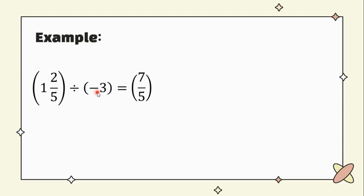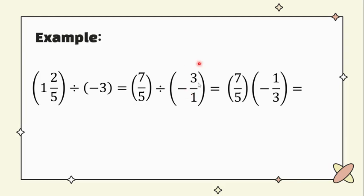We have here negative 3. As you can see, it's a whole number. Remember that a whole number has always a denominator of 1. So that would be divided by negative 3 over 1. Then, follow the rules in dividing fractions. That would be 7 over 5 times the reciprocal of this, negative 1 thirds. As you can see here, I simply remove the division symbol because if we have two grouping symbols beside each other, it means that the operation is multiplication. So 7 over 5 times negative 1 third, the product is negative 7 over 15.